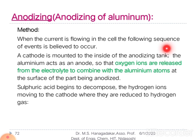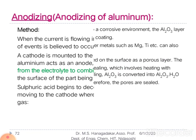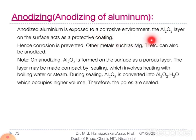When current flows in the cell, the following sequence of events is observed. The cathode is mounted inside the anodizing tank. Aluminium acts as the anode, and oxygen ions are released at the anode from the electrolyte, combining with the aluminium atoms to form the anodized layer. During this process, the sulfuric acid decomposes: hydrogen gas is evolved at the cathode side and oxygen is liberated, which also contributes to forming aluminium oxide at the anode side. When the anodized aluminium is exposed to a corrosive environment, the aluminium oxide layer forms a protective coating which prevents further corrosion.